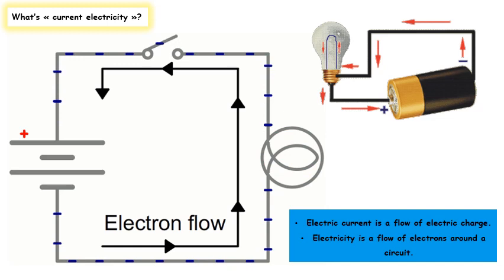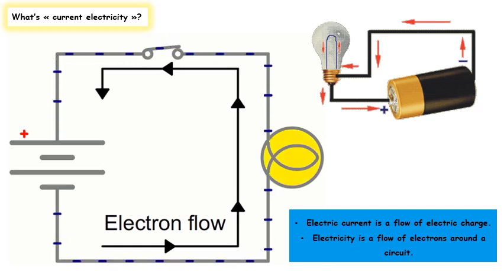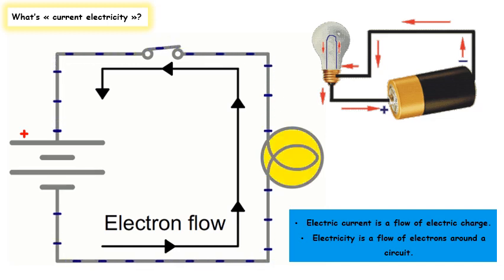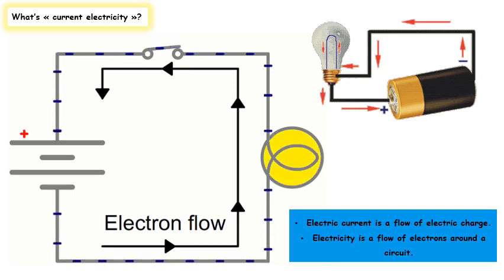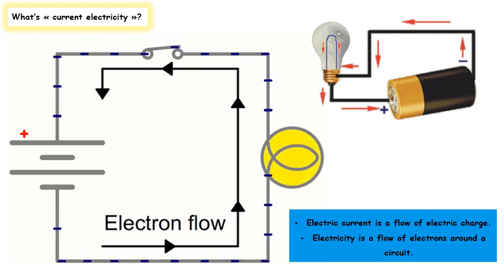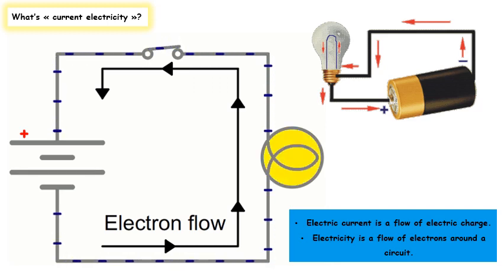When electrons move, they take electrical energy from one place to another. This is called current electricity. For an electric current to happen, there must be a circuit.